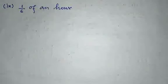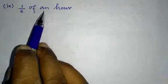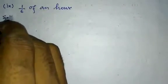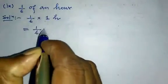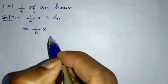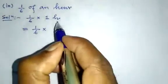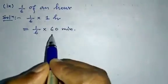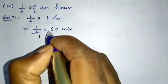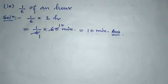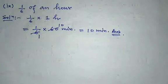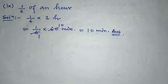Question number 9: find 1/6 of an hour. Solution: 1/6 into 1 hour. Convert hours to minutes — we know 1 hour equals 60 minutes. Cancel 6 — 6 tens are 60 — so the answer is 10 minutes. In this way you have to find the solution of all sums in question number 3. Try the rest yourself.